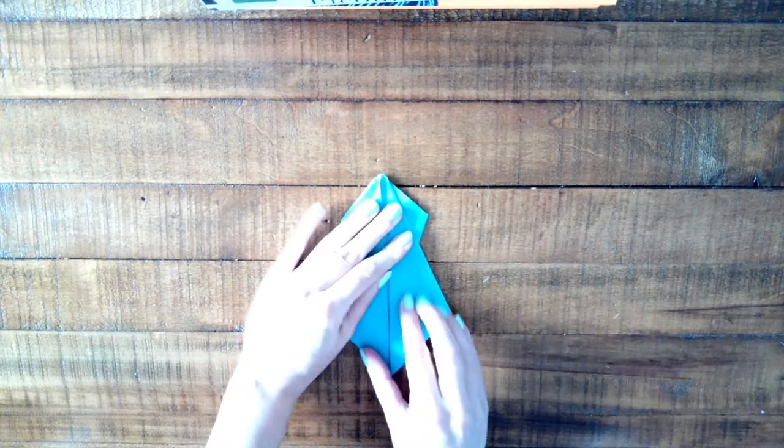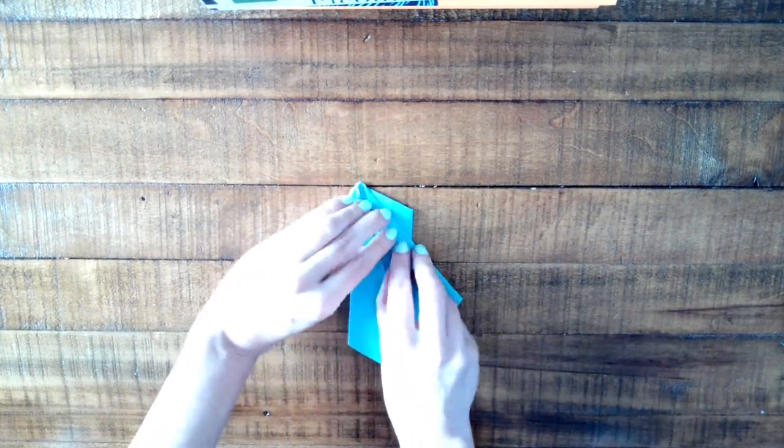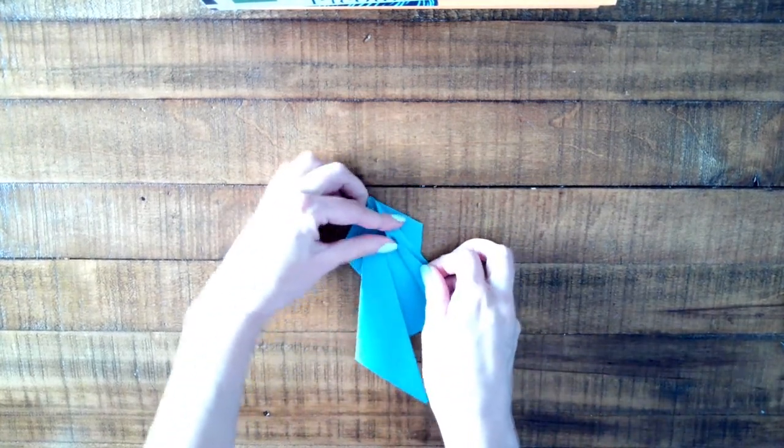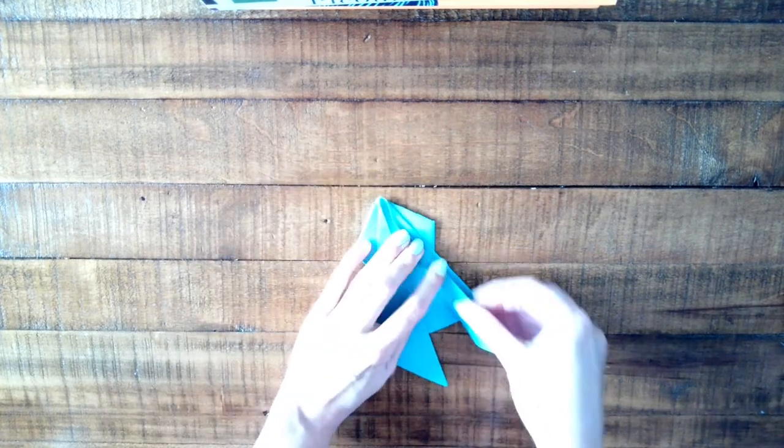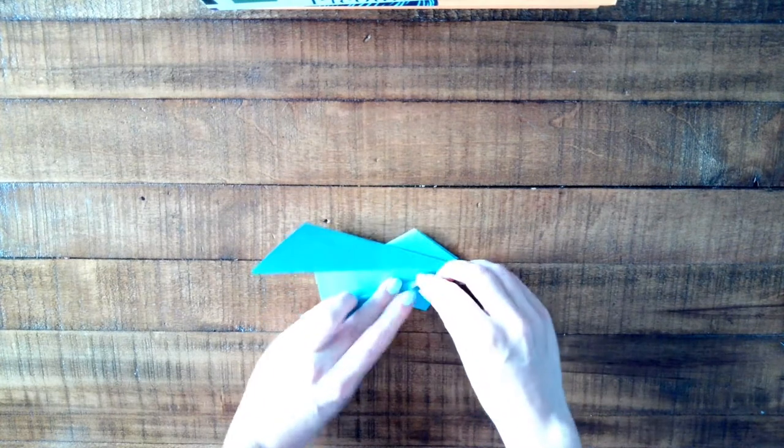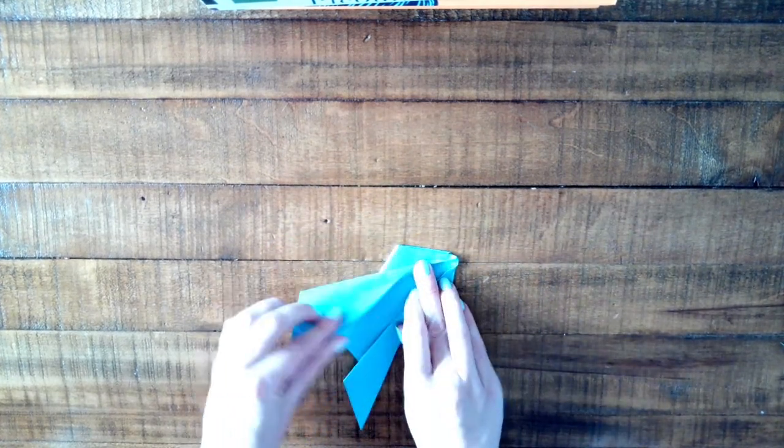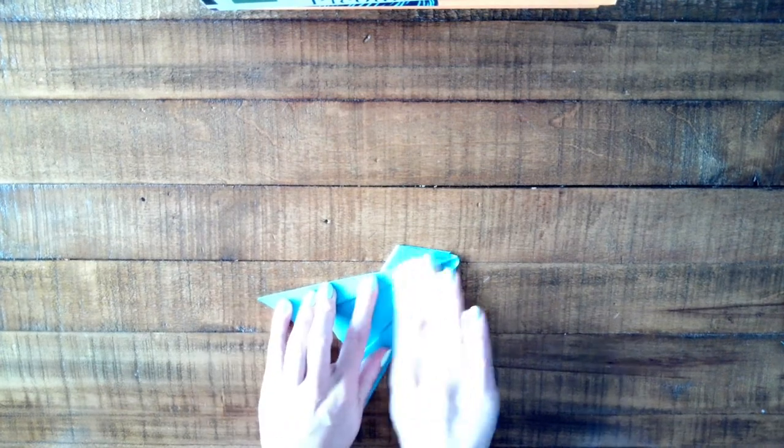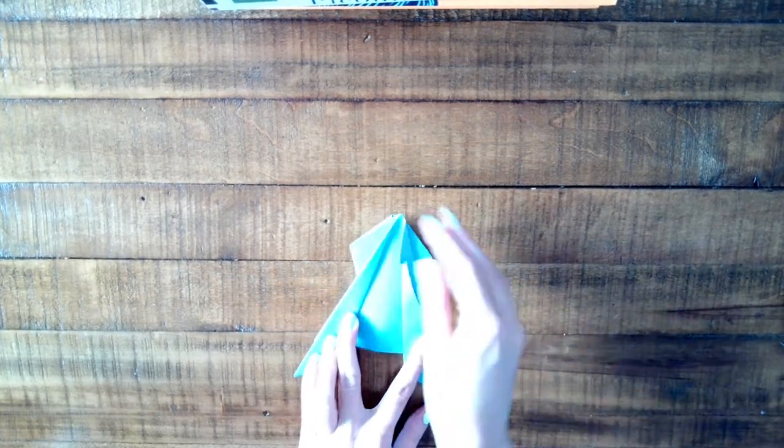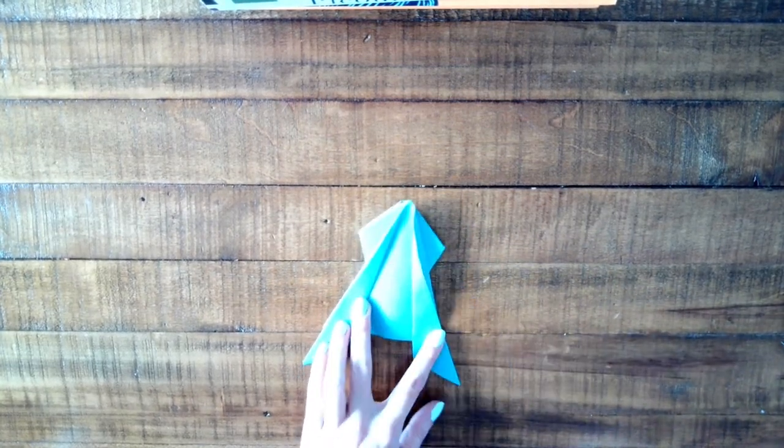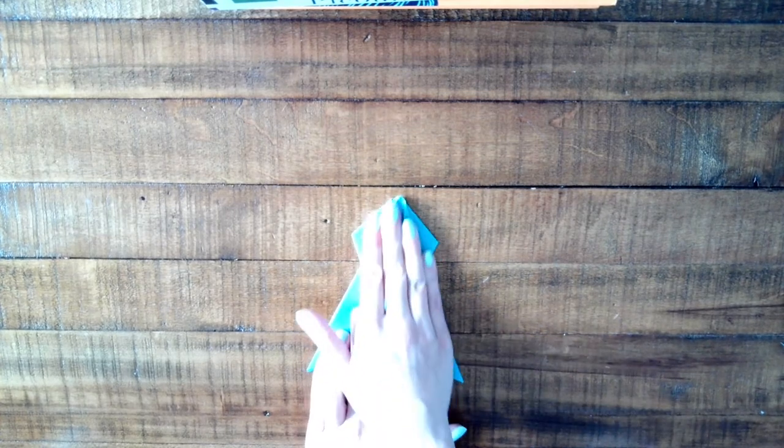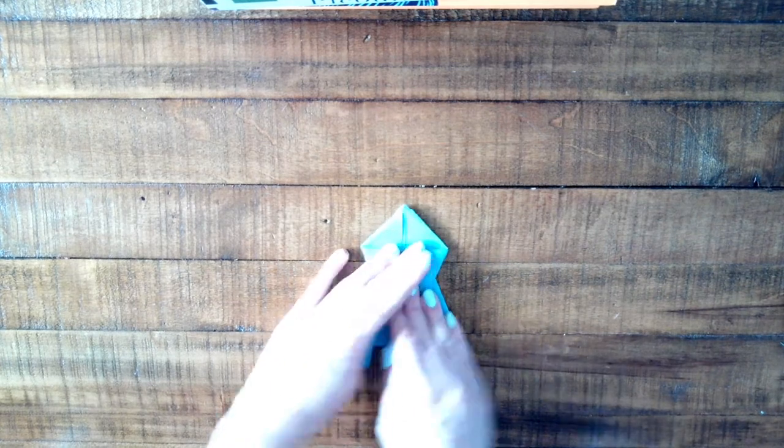Now we're going to give this frog some legs. So take the middle of that diamond you just made and fold it out towards the outer edge. And same thing on the other side. Take the middle and fold it out toward the edge. These are your froggie's legs. And this is what it should look like so far.